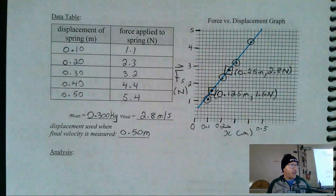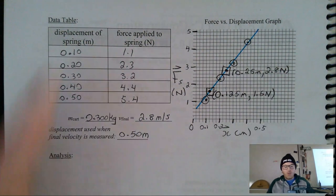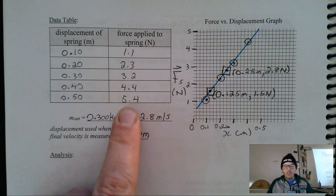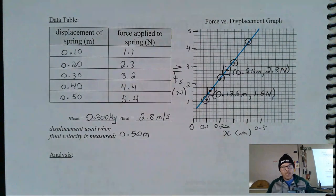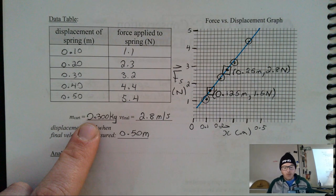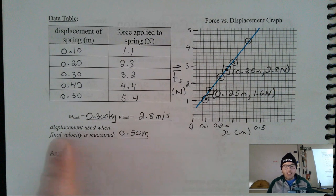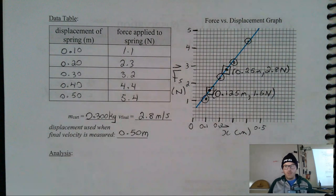This is data from the back of the lab manual — if you weren't in class, use the sample data there. The data table has displacements (values of x) and corresponding spring forces, which were graphed on a force versus displacement graph. The mass of the cart was 0.3 kilograms, and the final speed of the cart when released from 0.5 meters was 2.8 meters per second. That 0.5 meters is the spring stretch when the speed was measured.